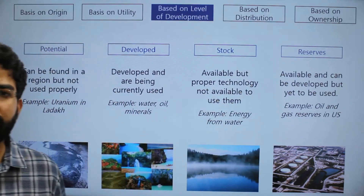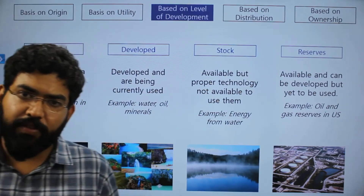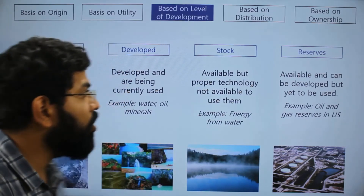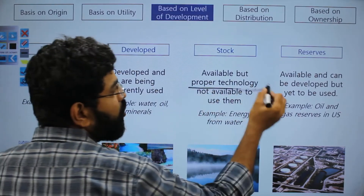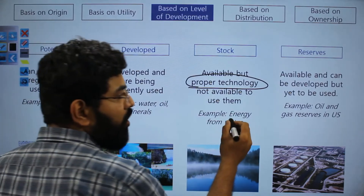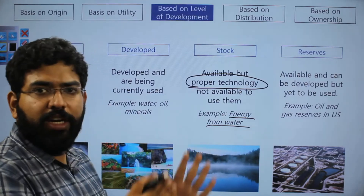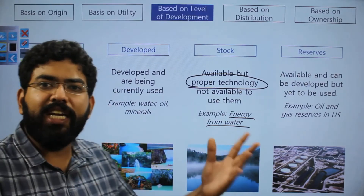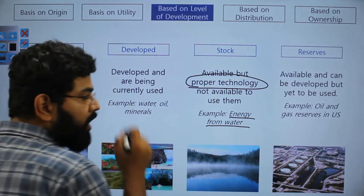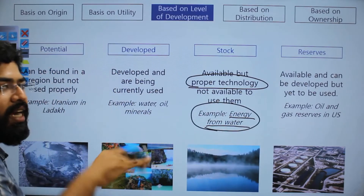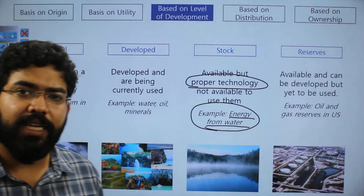Stock resources are those kept with us as potential for future use but with no proper technology currently available to exploit them. For example, water has potential as a fuel source — it can be split into hydrogen and oxygen, and hydrogen gas can be used for fuel needs — but so far we don't have the proper technology to explore that avenue, so water is a stock resource.